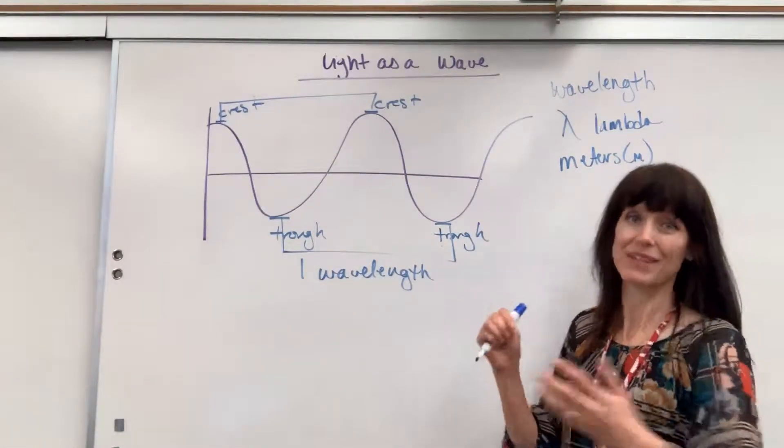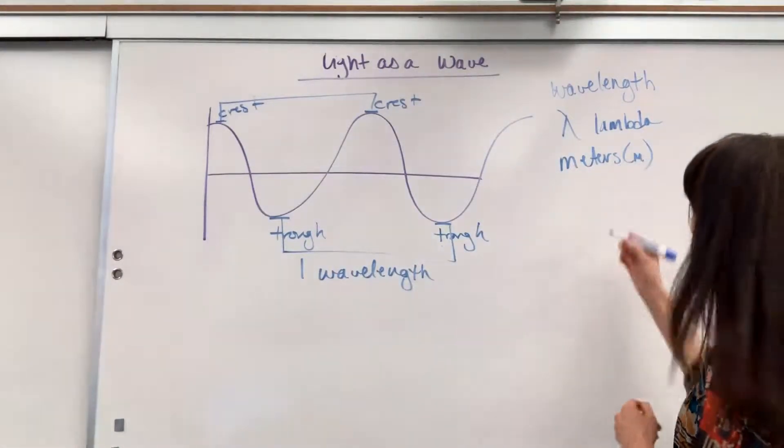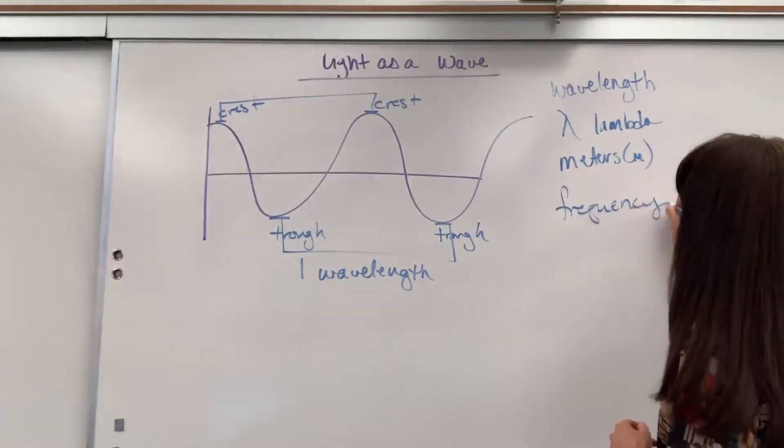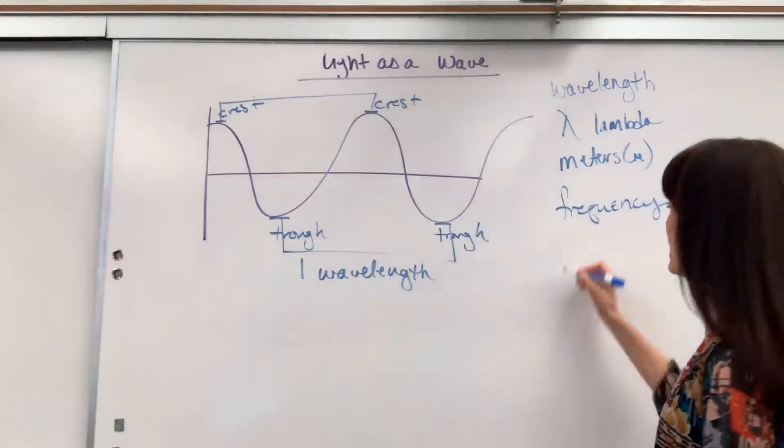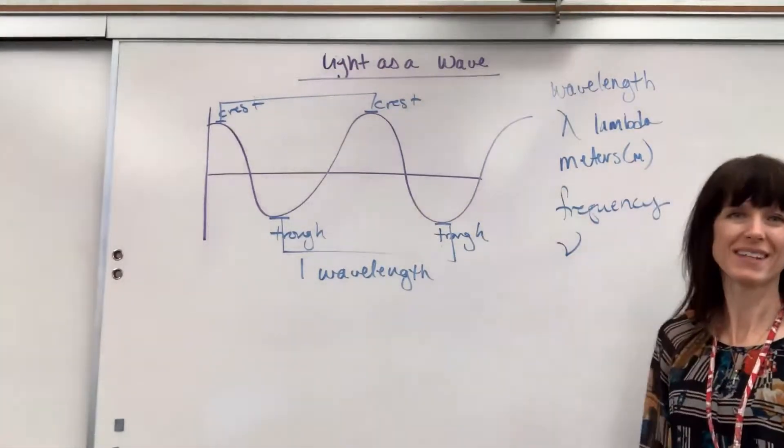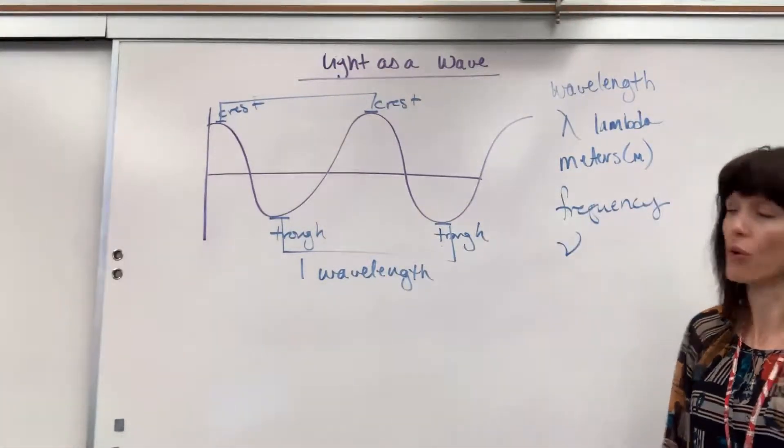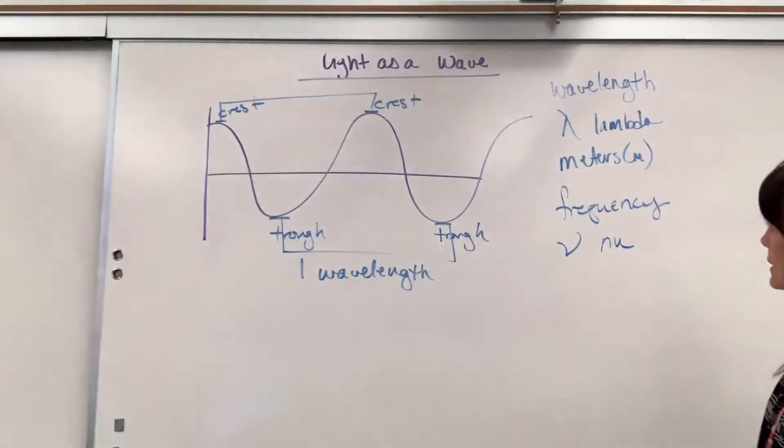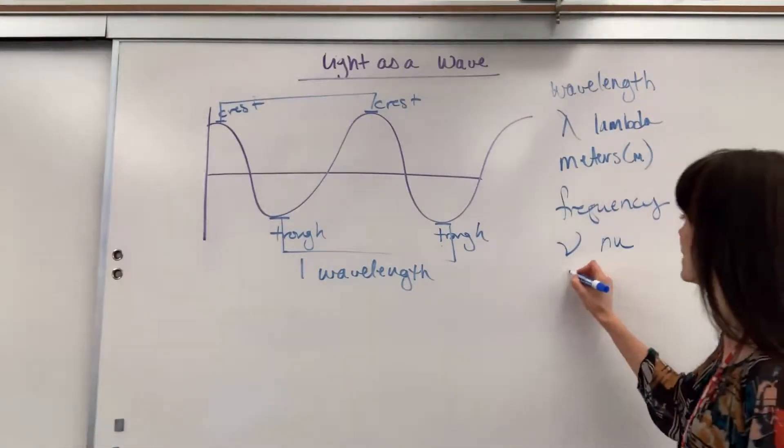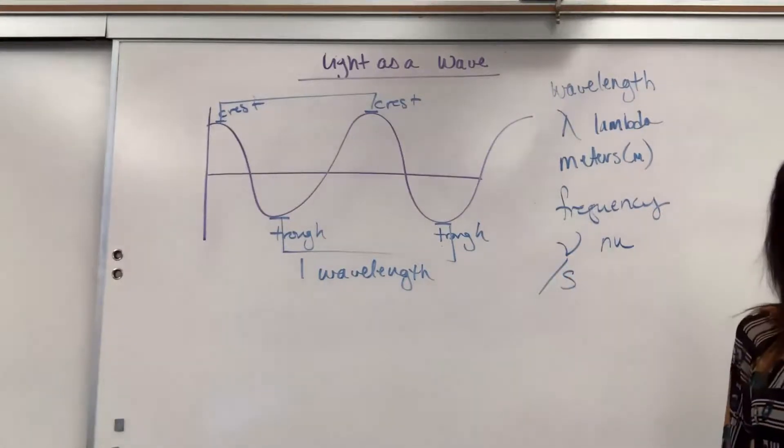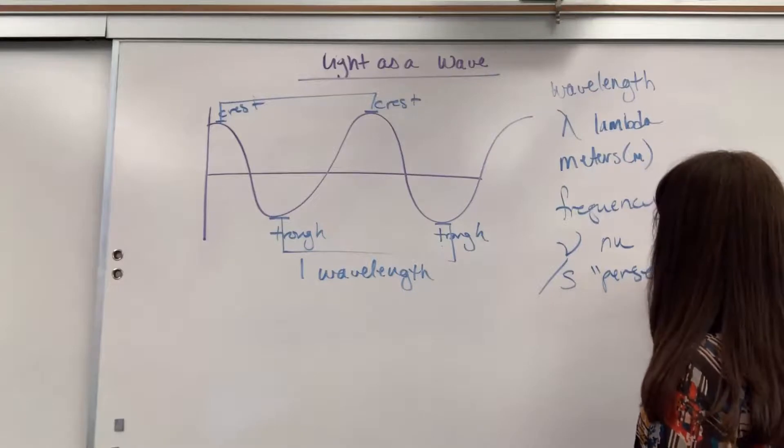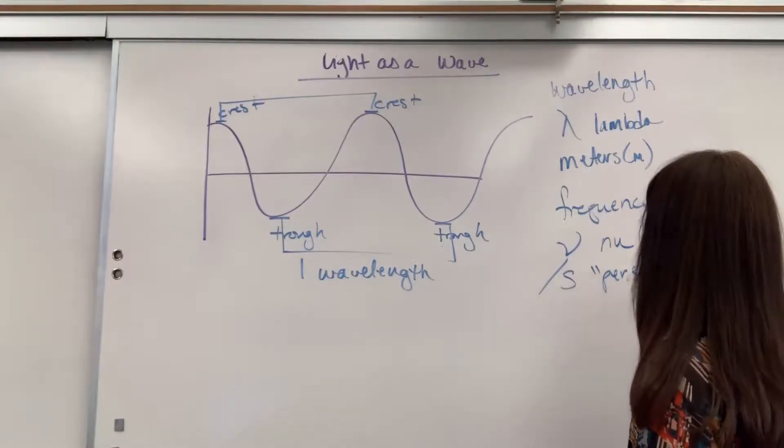The amount of waves that we can fit in one second is called frequency. Now frequency also has a symbol, and it is called nu. Kind of looks like a fancy V or U. Also from the Greek alphabet. And the unit on nu is, this is interesting, per second. So the way you say that is per second.